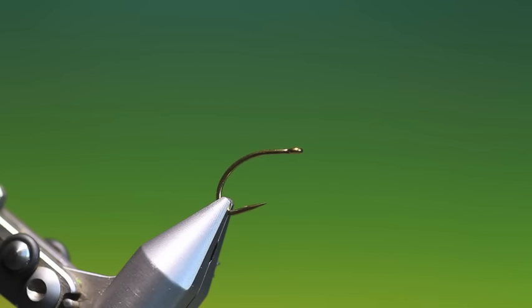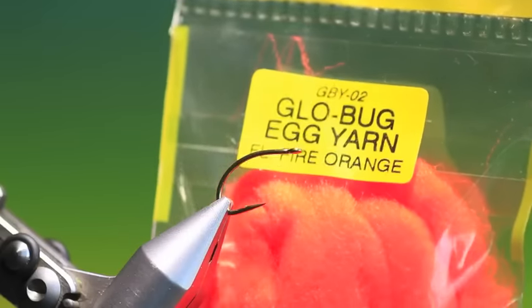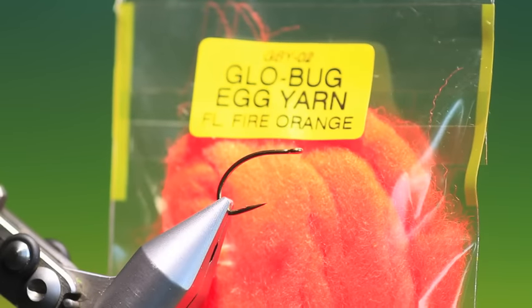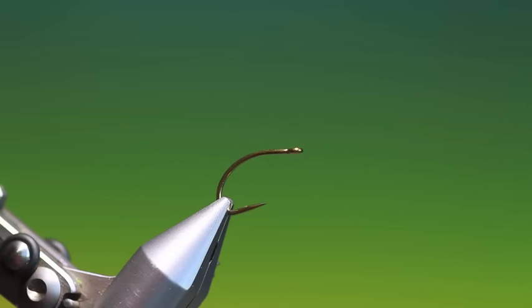This is my Glowbug pattern. For this I use the Veniard Glowbug egg yarn. It comes in many different colors, but I have a little technique here.